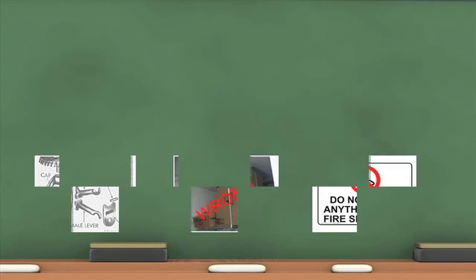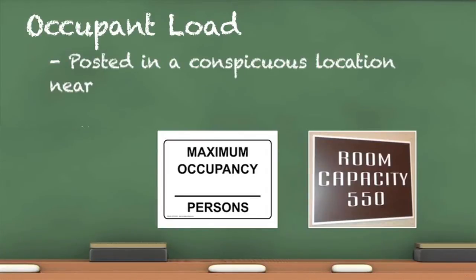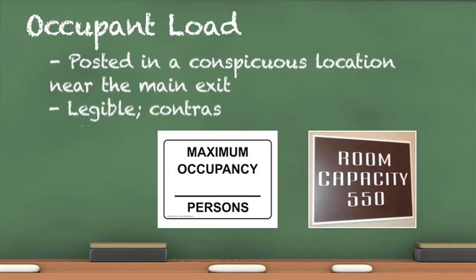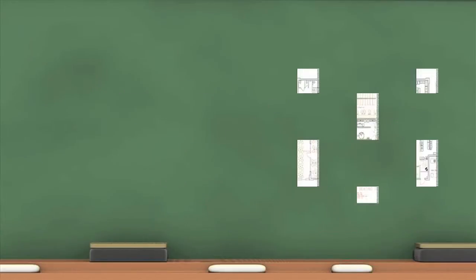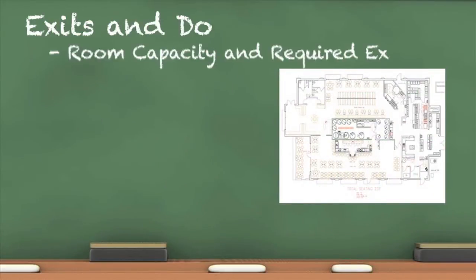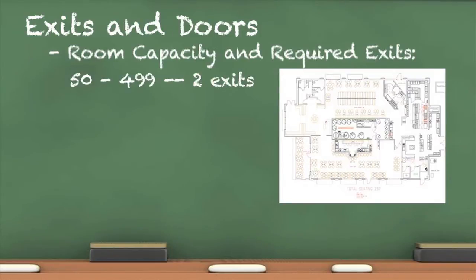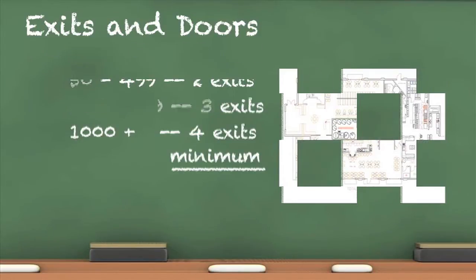Every room or space in an assembly occupancy shall have the occupant load posted in a conspicuous place near the main exit. The signs must be legible with contrasting text and background. There are many factors that determine the number of required exits — this is just a guideline: 50 to 499 people requires 2 exits; 500 to 999 requires 3 exits; 1,000 or more requires 4 exits minimum.